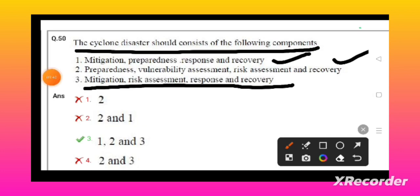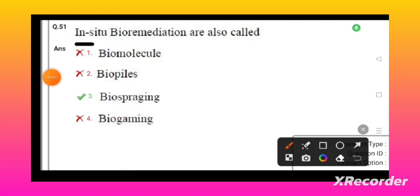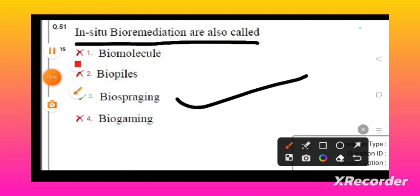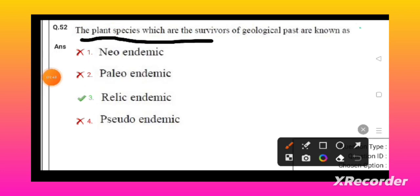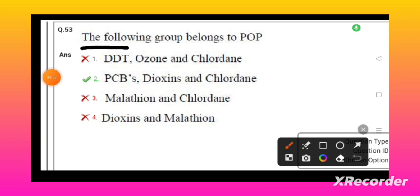The in-situ bioremediation is called biosparging. The plant species which are survivors of the ecological past is known as relict or relic endemic. The following group belongs to POP (persistent organic pollutants): PCBs, dioxins, and chlordane.